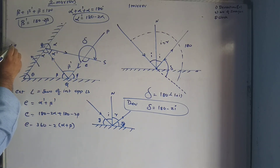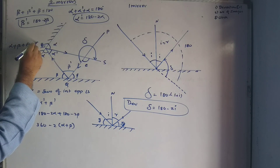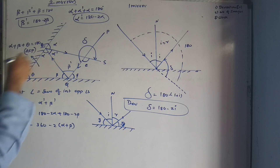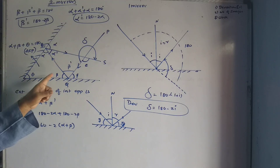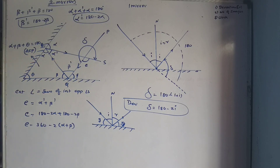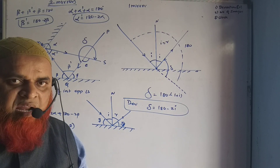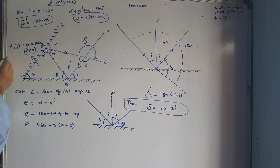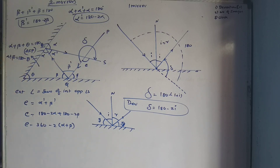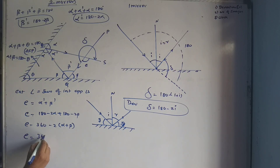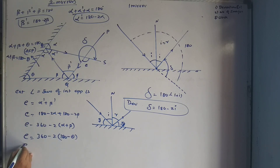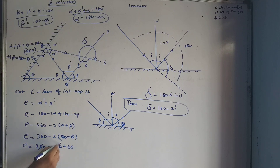Now, in this triangle, by the angle sum property, alpha plus beta plus theta equals 180 degrees — the sum of angles in a triangle is 180 degrees. Therefore, alpha plus beta equals 180 minus theta.